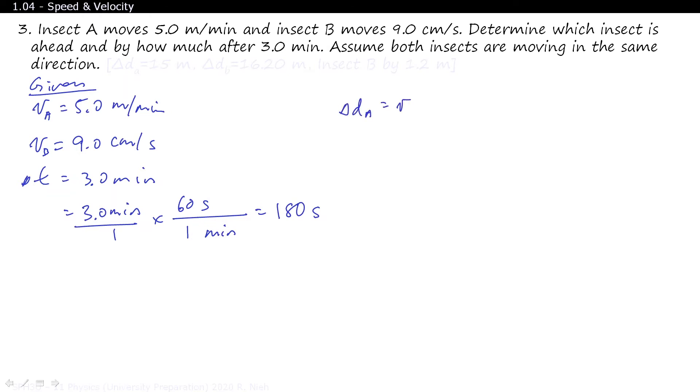So insect A equals VA delta T, which is 5.0 meters per minute times 3 minutes, which works out to 15.0 meters. 2 sig figs, so we'll just leave it at 15 meters. As for DB, which equals VB times delta T, that is 9.0 centimeters per second times 180 seconds. And that works out to 1620 centimeters, which equals 16.2 meters.